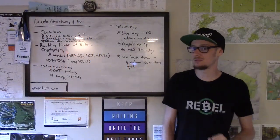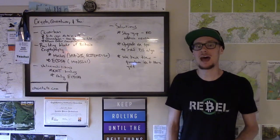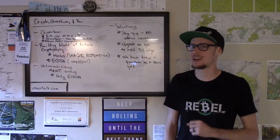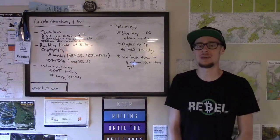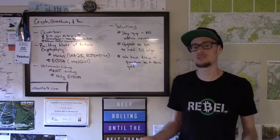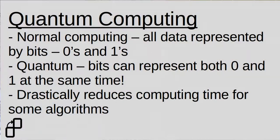With quantum computing, bits can be represented as having a state of zero or one at the same time. It's an interesting property of quantum mechanics that allows a bit to have two different states that can be read and processed in a quantum computer. What this ultimately allows is much, much faster computation than normal computing can offer.